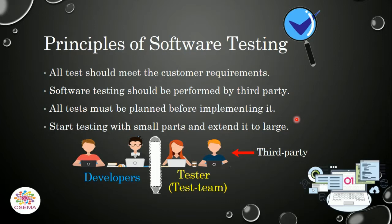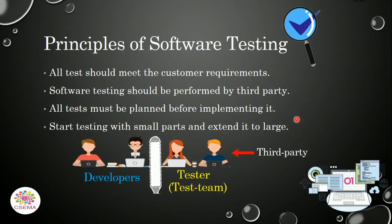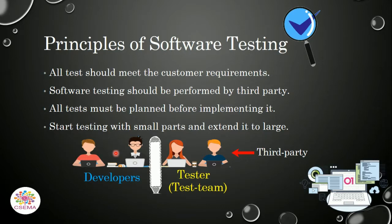All tests should meet the customer requirements — meaning the tests performed on the systems should not differ from the requirements of the customers. The second principle is that software testing should be performed by a third party. The development team who developed the software should not test it themselves. For example, if company A develops a software product, testing must be performed by a different third party, company B — the testers or testing team who test the developed product.